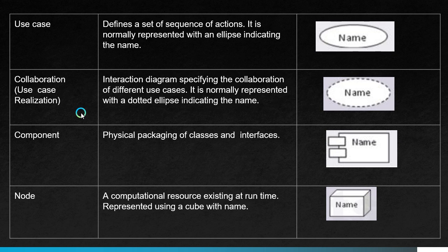The next element under structural things is node — a computational resource existing at runtime, represented using a cube with a name. During runtime there is an element or resource that gets computed, and that resource is known as a node.